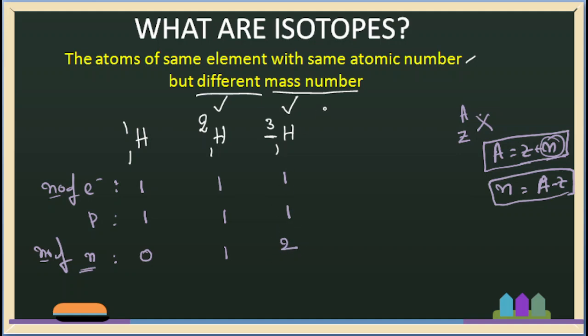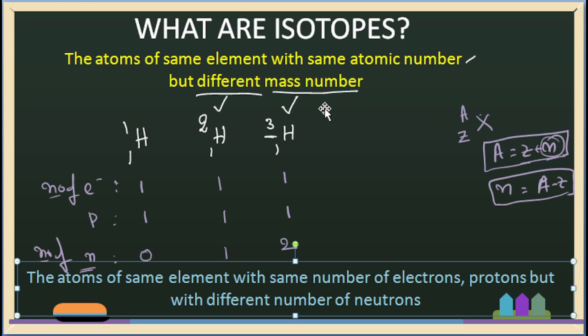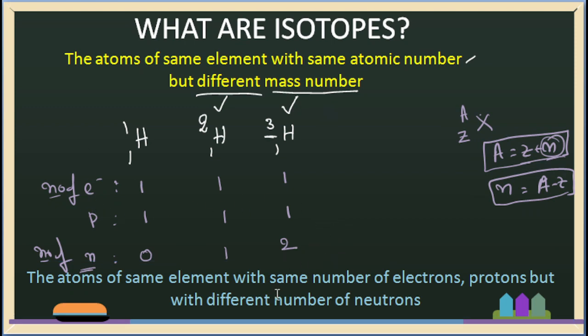So, the definition for isotopes: isotopes are atoms with the same atomic number but different mass numbers. We can also define it as atoms of the same element with the same number of electrons, same number of protons, but with a different number of neutrons.